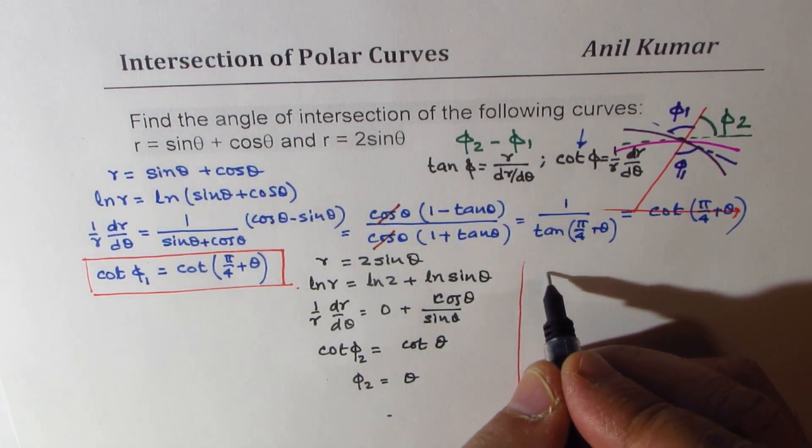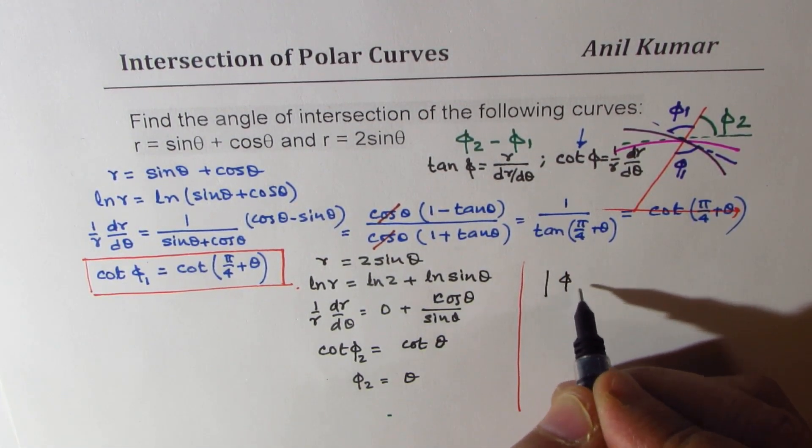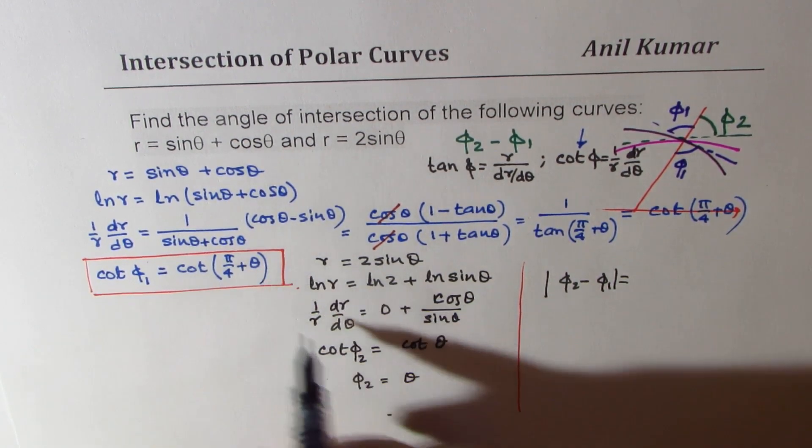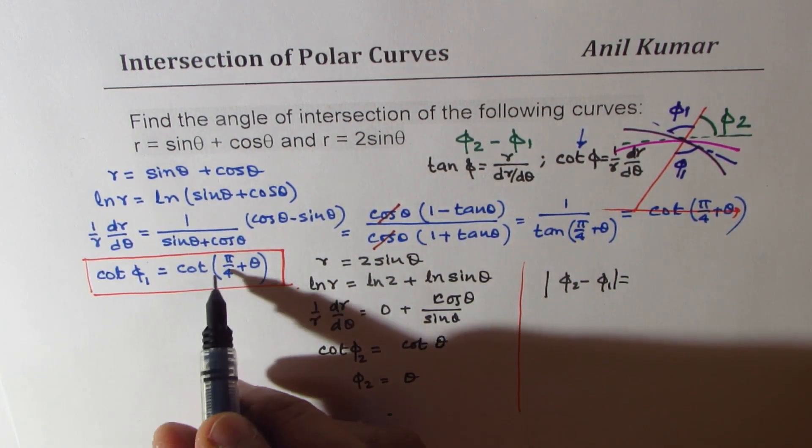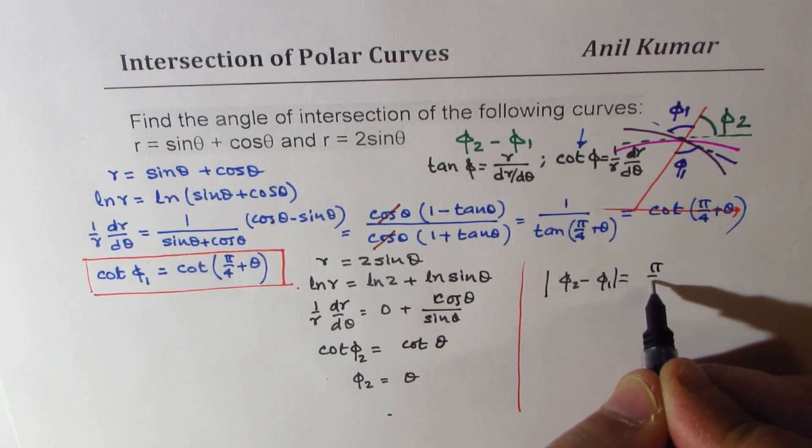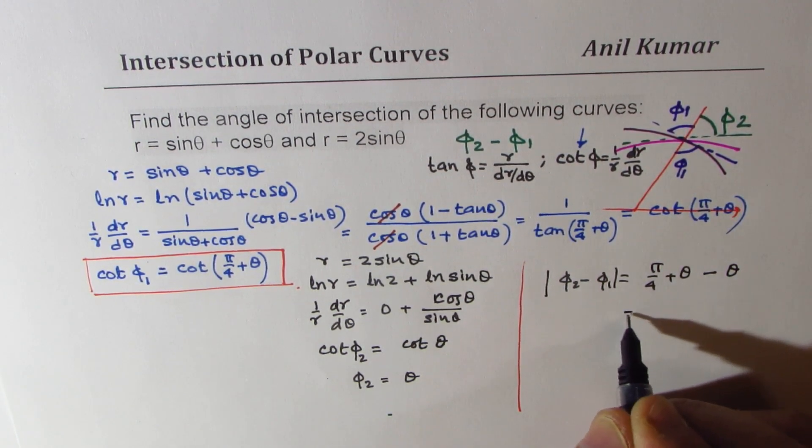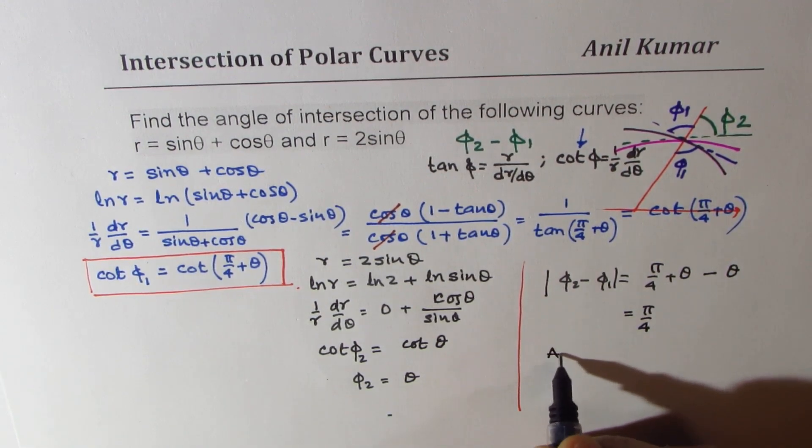So it's necessary to write absolute values. You really don't know which is greater than what. Of course, you can see it here. So we are writing pi by 4 plus theta take away theta. And that clearly gives you pi by 4.